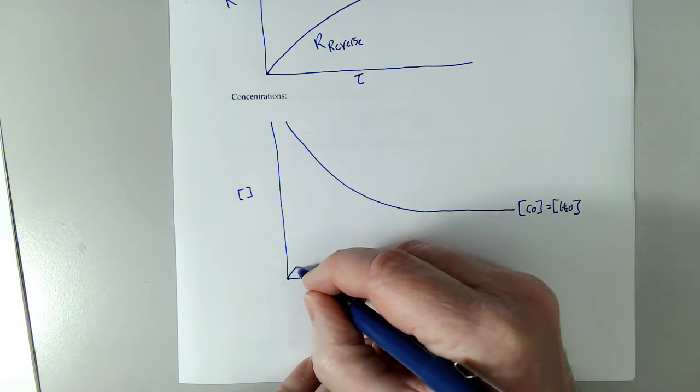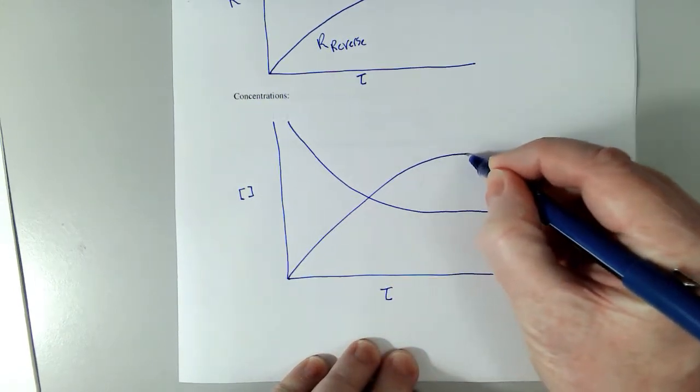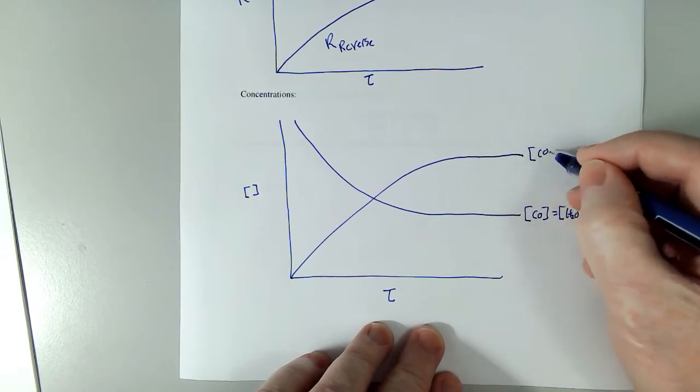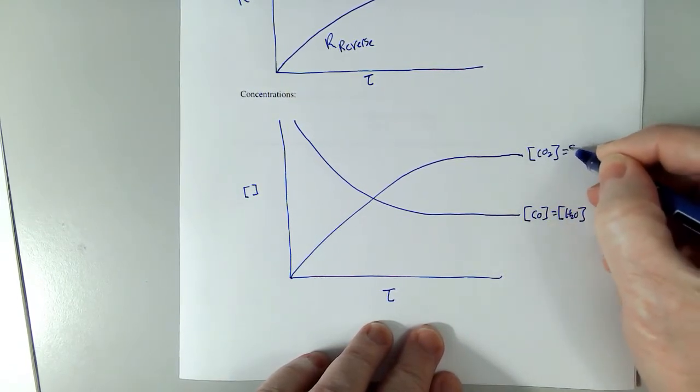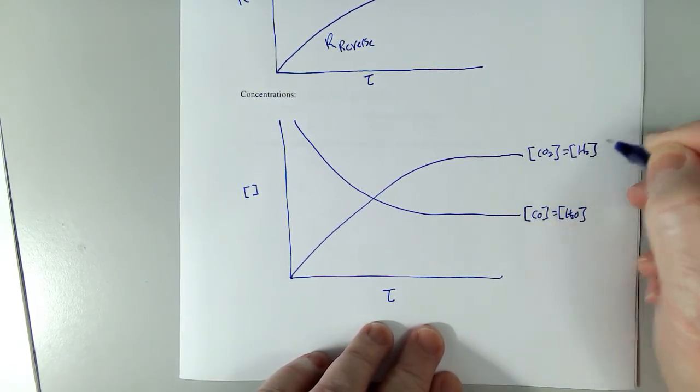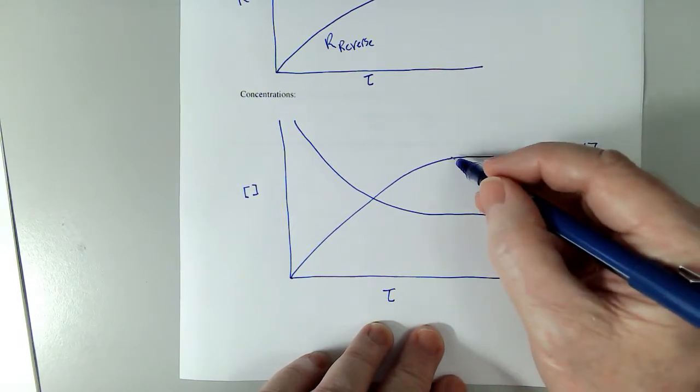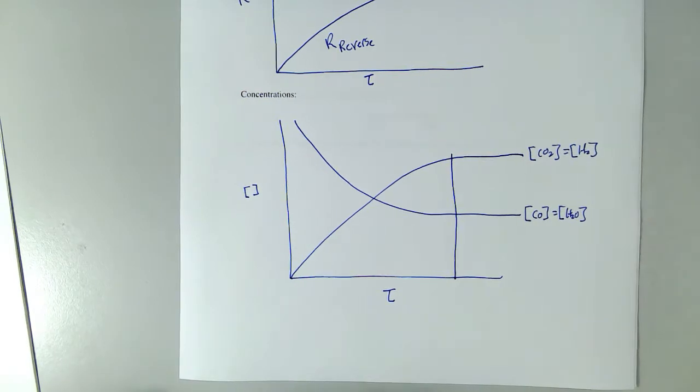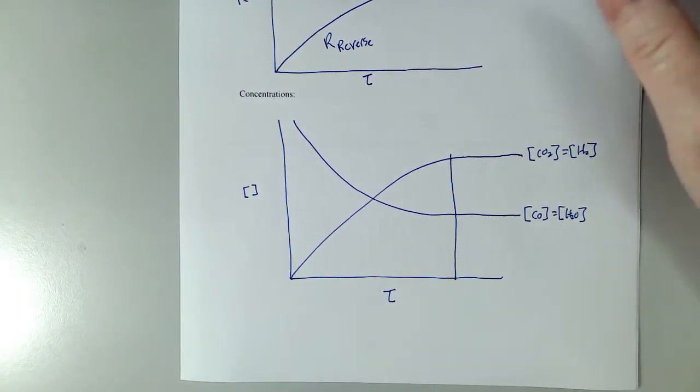Now, the rates of the products increase. CO2, which would be equal to H2. Now, when they quit changing, which is basically right here, equilibrium is achieved. Now, it's important to point something out here.